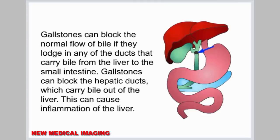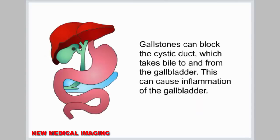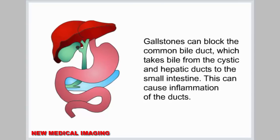Gallstones can block the normal flow of bile if they lodge in any of the ducts that carry bile from the liver to the small intestine. Gallstones can block the hepatic ducts, which carry bile out of the liver — this can cause inflammation of the liver. Gallstones can block the cystic duct, which takes bile to and from the gallbladder — this can cause inflammation of the gallbladder. Gallstones can block the common bile duct, which takes bile from the cystic and hepatic ducts to the small intestine, causing inflammation of the ducts.